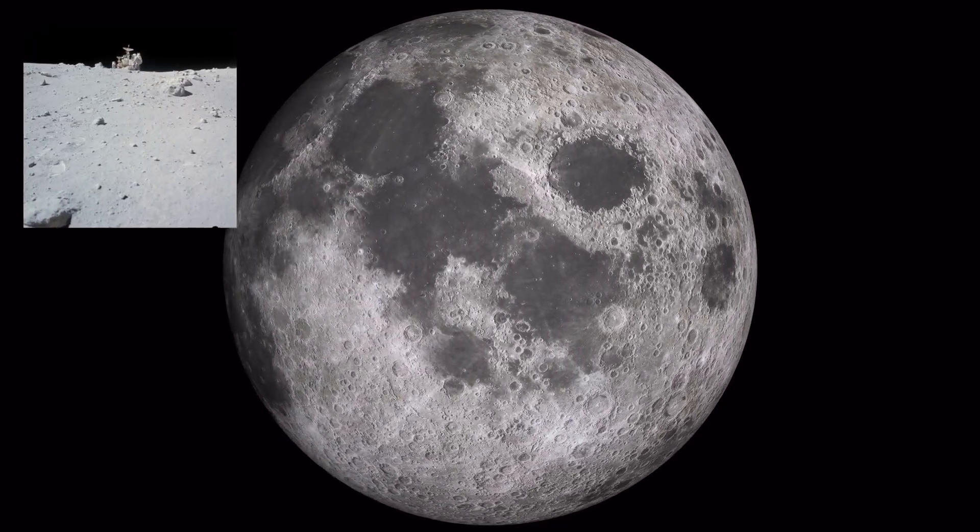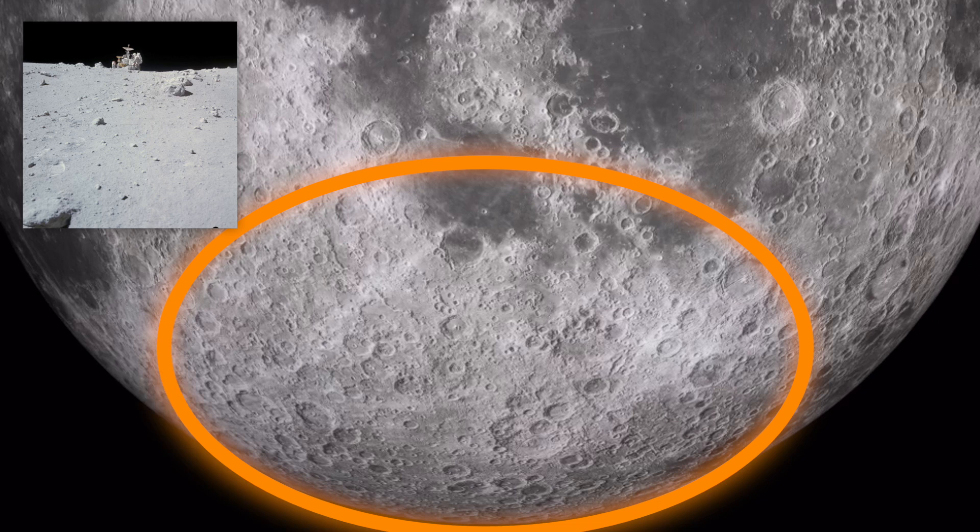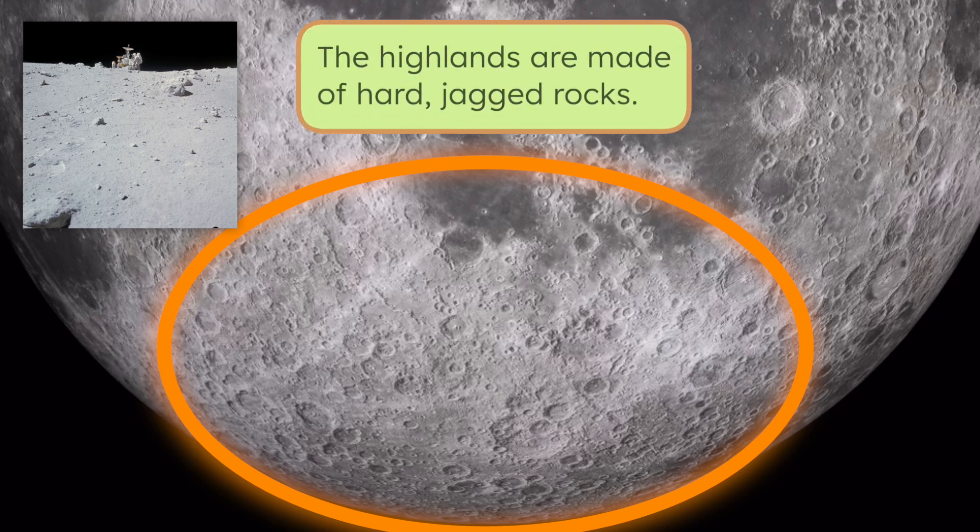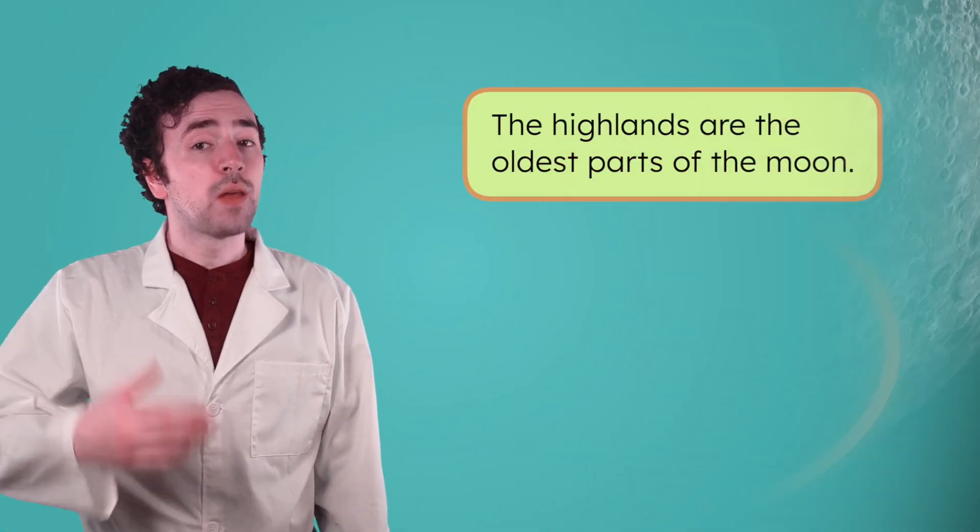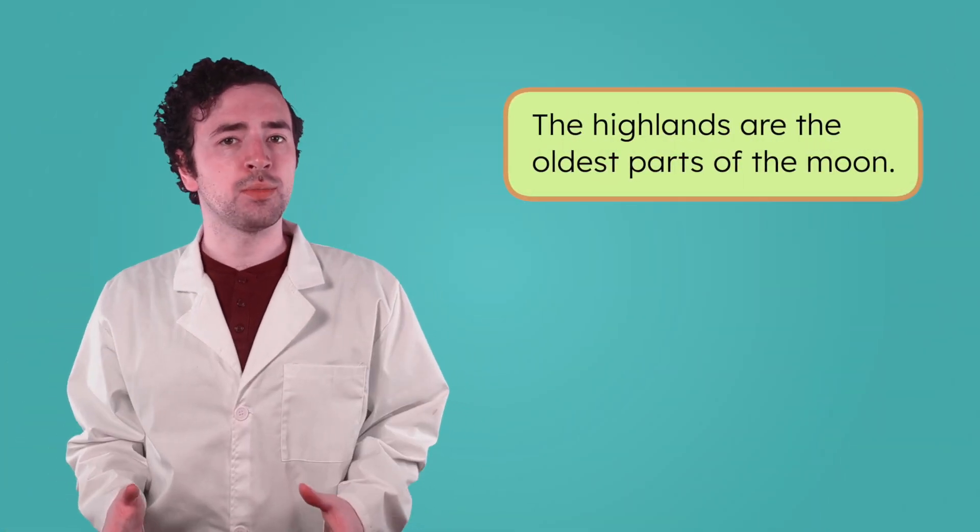So what are those dark and light areas really? First, any of these bright, lumpy areas like this one on the moon's surface are called highlands. The highlands are made of hard, jagged rocks. The highlands are the oldest parts of the moon's surface.